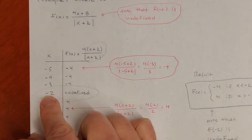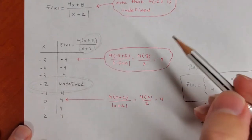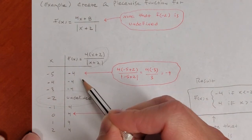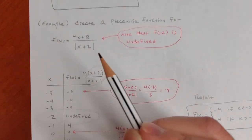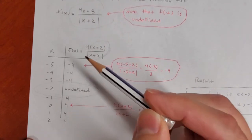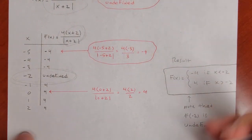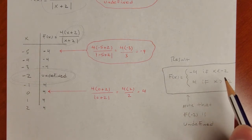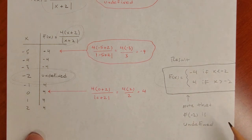Here's the table confirming that pattern. If x is less than negative 2, y is negative 4. If x is greater than negative 2, y is 4. Despite its complex appearance, this function only gives you two values, so it's easy to summarize as a piecewise function: y is negative 4 if x is less than negative 2, and y is 4 if x is more than negative 2. f(-2) is undefined, consistent with the original.